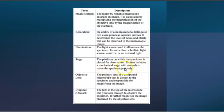The stage is the platform on which the specimen is placed for observation. It often includes a mechanical stage with controls to move the specimen precisely. The objective lens is the primary lens in a compound microscope that is closest to the specimen and responsible for magnifying the image. The eyepiece or ocular is the lens at the top of the microscope that you look through to observe the specimen. It further magnifies the image produced by the objective lens.